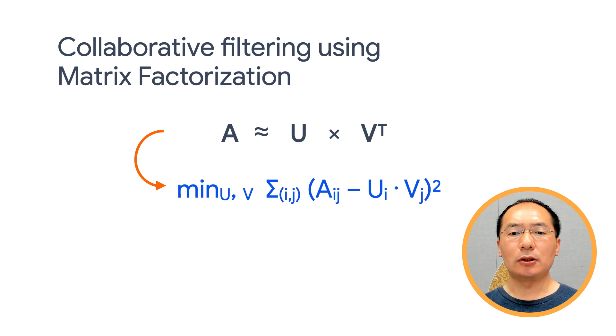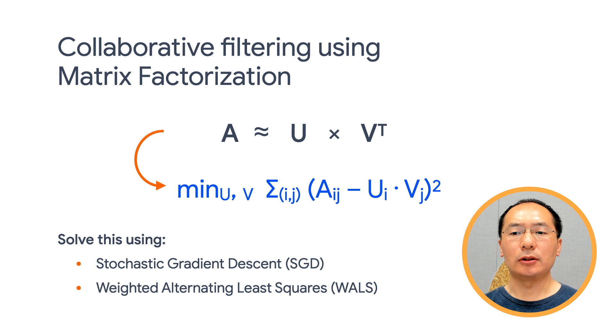So our optimization objective then becomes minimizing the summation of the squared difference between the feedback label and the predicted feedback, as you can see in the mathematical form in blue. We can solve this using either stochastic gradient descent, SGD, or weighted alternating least squares, WALS. SGD, I'm sure you have heard about it. When you train your neural networks, SGD is a generic method, while WALS is specific to this problem. The idea of WALS is that for each iteration, we alternate between fixing U and solve for V, and then fixing V and solving for U.